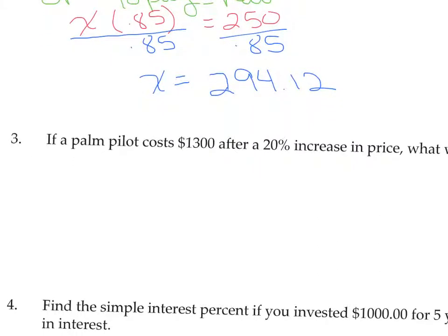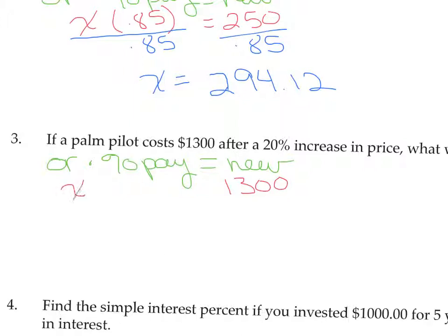If a Palm Pilot costs $1,300 after a 20% increase in price, what was the original cost? Again, the original times whatever percent you're paying equals the new. This time, we know the new price of the Palm Pilot is $1,300. The original we don't know, so that's going to be X.